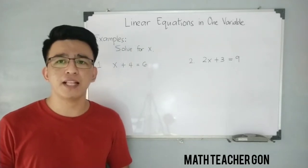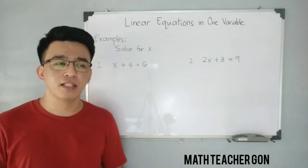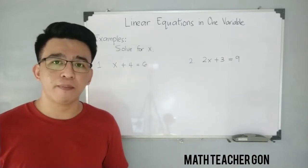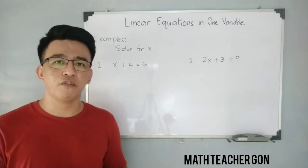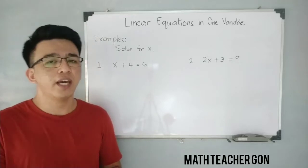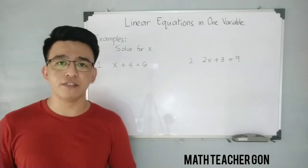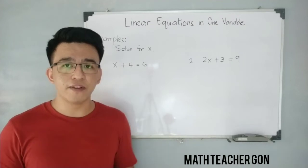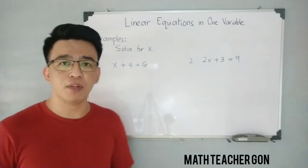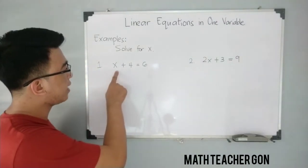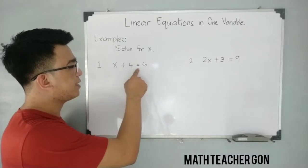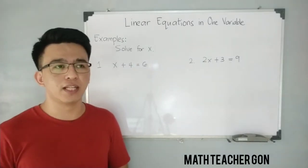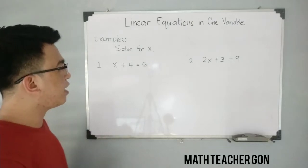What is the purpose of the variable x in this given equation? We need to solve for the variable x. We know that this variable represents a number, and if we substitute that value into the given equation it will satisfy the equation. So let's find the value of x in item number one: x plus 4 is equal to 6.